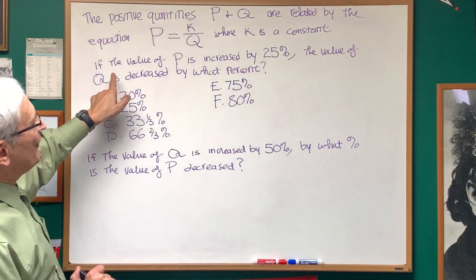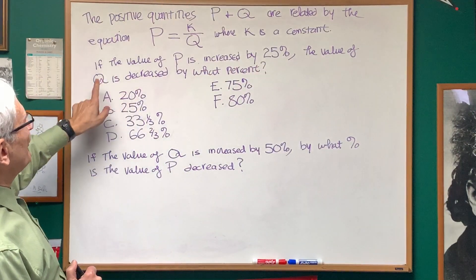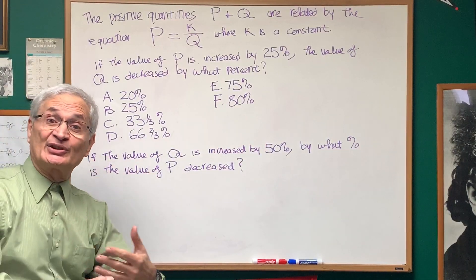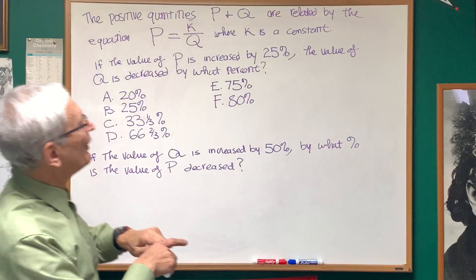So, the question is, if the value of P is increased by 25%, the value of Q is decreased by what percent? Since it's an inverse relation, when one value goes up, the other value goes down. How are we going to figure this out?